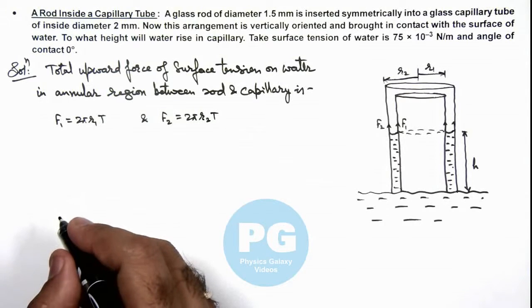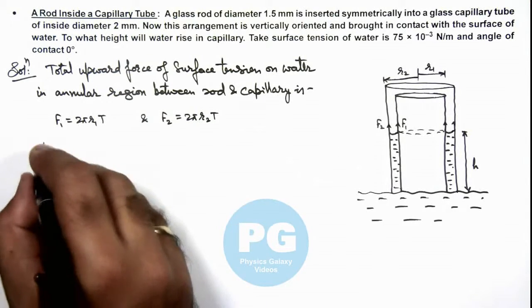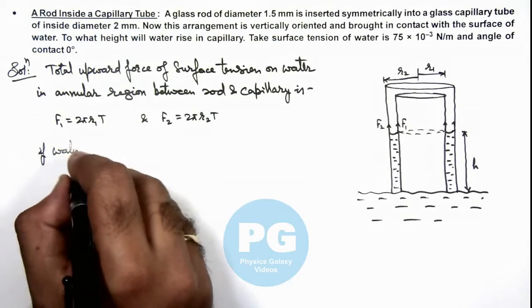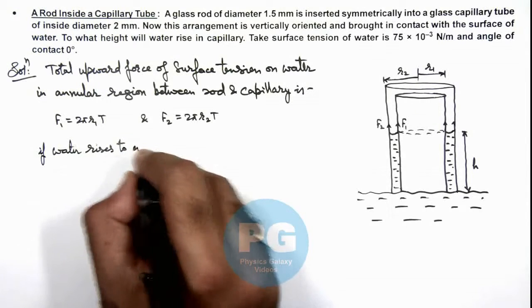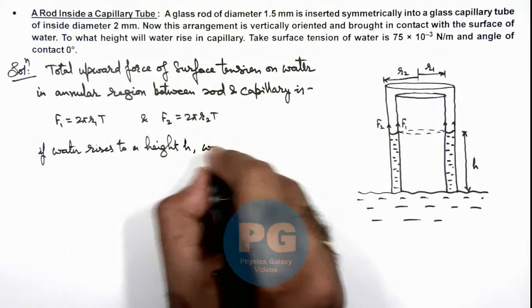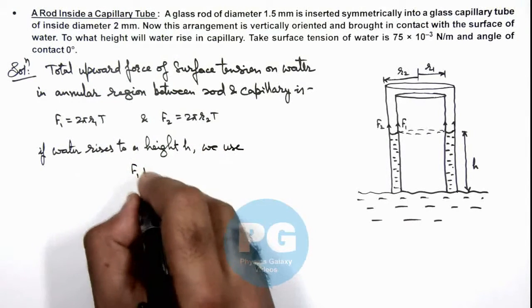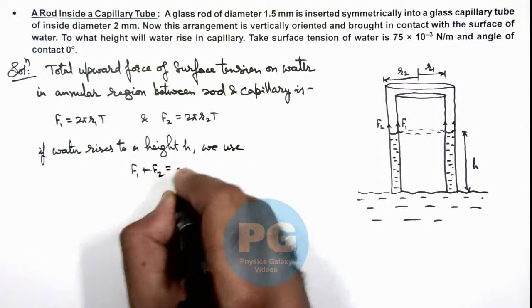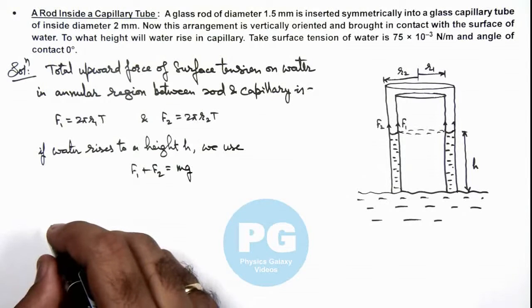Now in this situation, we can write if water rises to a height h, then here we use the sum of forces F₁ plus F₂ must be balancing the weight of water which is raised in the annular region.